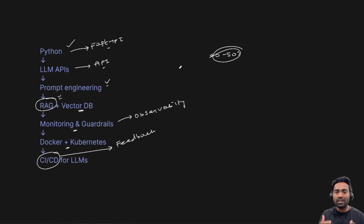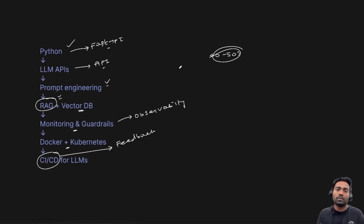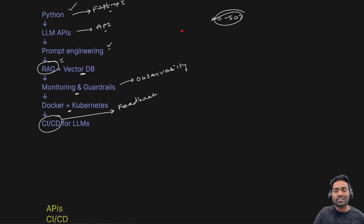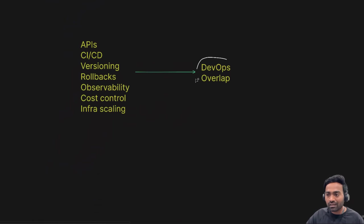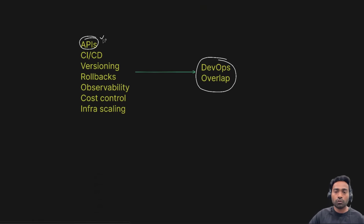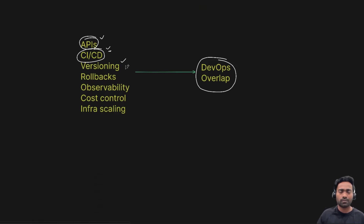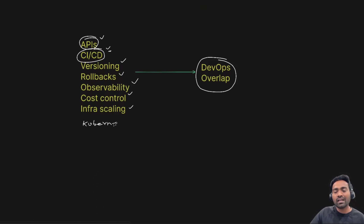Of course, you should understand the LLM lifecycle — how exactly they are built and deployed. But because you know the concept of DevOps, it becomes easy. You already know some of the tools, the culture, and the principles, so it is easy to transition to an LLMOps position. The similarities between DevOps and LLMOps are: in both cases you use APIs, deal with CICD, versioning — whether model versioning or application versioning — rollbacks, observability, cost control, infrastructure scaling, Kubernetes, and containers.